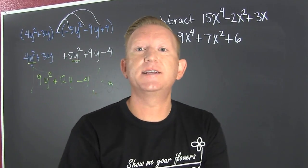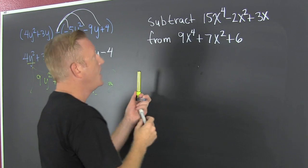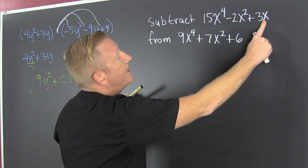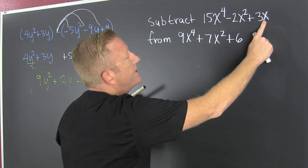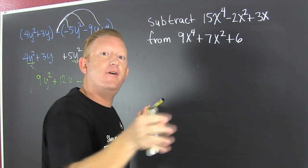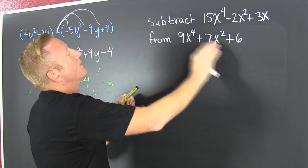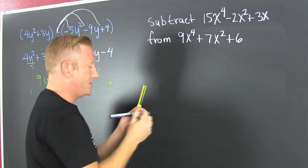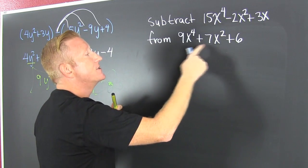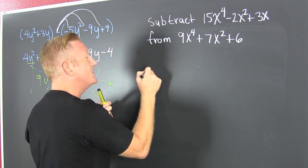What's next? I want to subtract (15x⁴ - 2x² + 3x) from that. Now this from that, so this from that. I'm gonna do that - this from that. From goes first, it's like a letter, it's from somewhere and goes to something else.